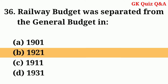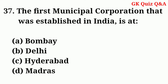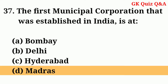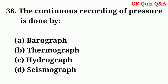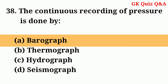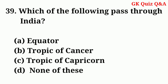The first municipal corporation that was established in India is at — Answer: D — Madras. The continuous recording of pressure is done by — Answer: A — Barograph. Which of the following passes through India?